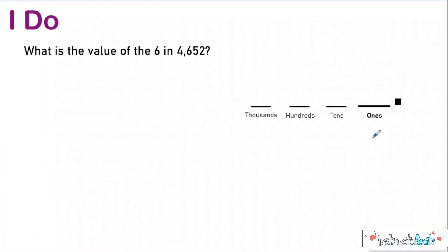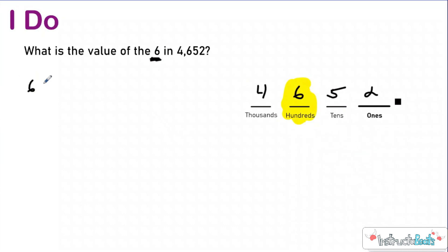Let's take a look at an I-do problem. Here I have just up to the thousands place, here's my decimal, and I want to know: what is the value of this six? The really easy way is you have six groups of 100, because it's a 6 in the hundreds place — six one-hundreds, which is 600. That is the value that this digit is contributing to the overall value of 4,652.